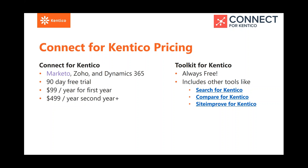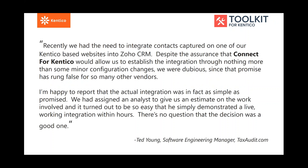Our Connect for Kentico module comes with a 90-day free trial and works with Marketo, Zoho, and Dynamics 365. The first year price is $99 per year per production site — use as many forms as you want. After that, it's $500 a year going forward. We also have paying customers already. One quote from taxaudit.com: when we first brought them the product, they expected a long process to integrate Zoho with Kentico. I said it would take about two hours, and the guy literally laughed at me. But sure enough, within a few hours their team had it up and running and couldn't believe how easy it was.